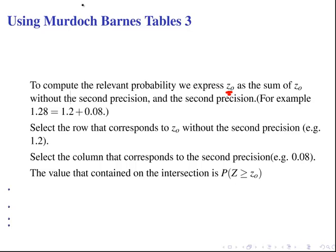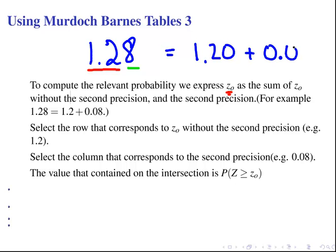What I mean by that is we have a number like 1.28 or 1.96. We take out the first two digits and then the last digit after that. So we're splitting it up into two numbers: 1.20 and 0.08. This is going to be our row and this is going to be our column.